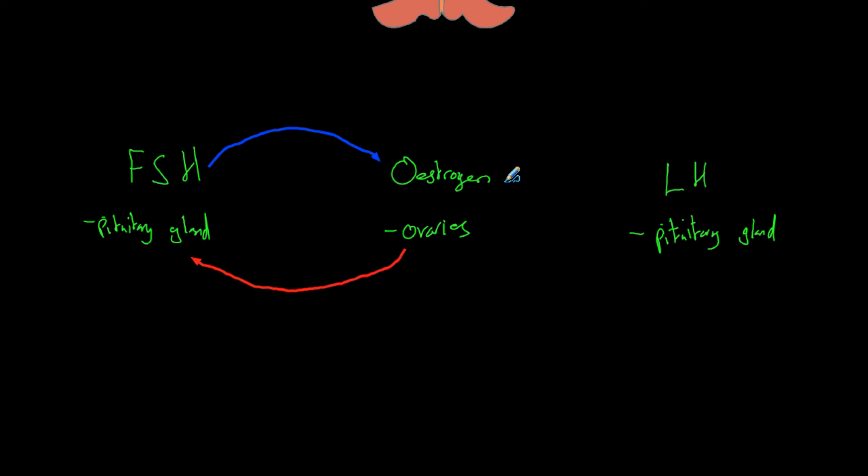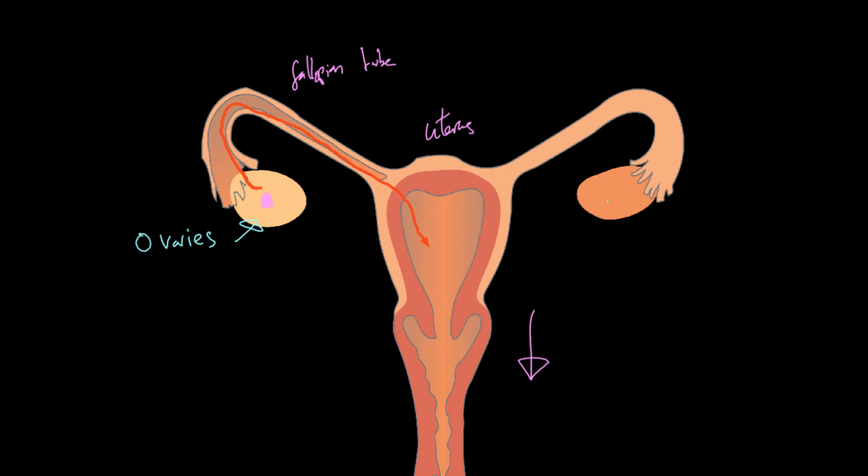Oestrogen will also cause LH to increase. And now after a while, when we have enough LH in the blood, the job of LH is to allow the egg to be released. So after around about 14 days, the oestrogen has allowed there to be enough LH in the blood that the egg is released. And that process is known as ovulation. So egg release approximately 14 days into the cycle is known as ovulation.